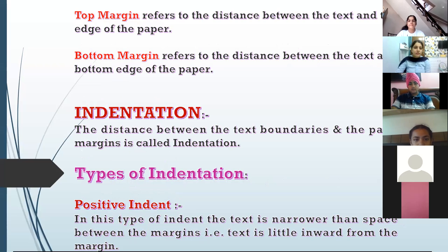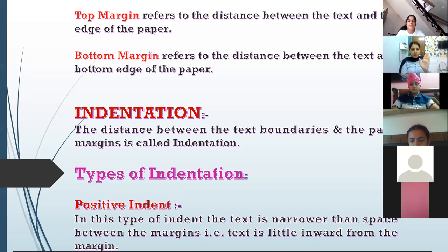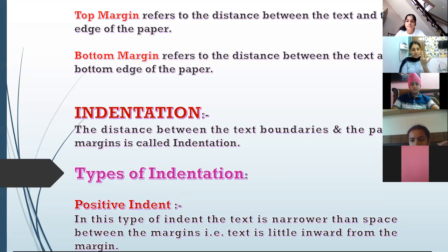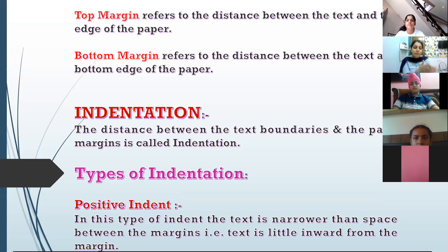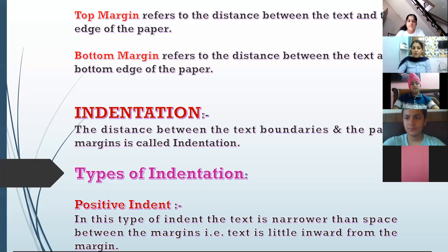So basically four types of margins. We also have one more — the gutter margin. The gutter margin is used basically at the time of printing. When you have a one-sided page and you bind it, you leave a certain amount of space so that the binding doesn't cover your text. The margin left for the purpose of printing and binding is called the gutter margin.